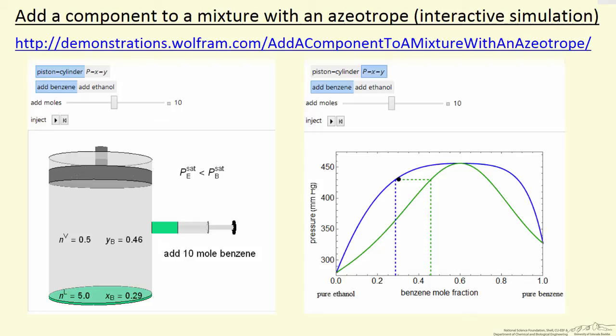Suppose I add 10 moles of benzene at isothermal conditions to this mixture, so we're going to show it as adding a liquid but we're going to add or remove heat to get back to equilibrium.